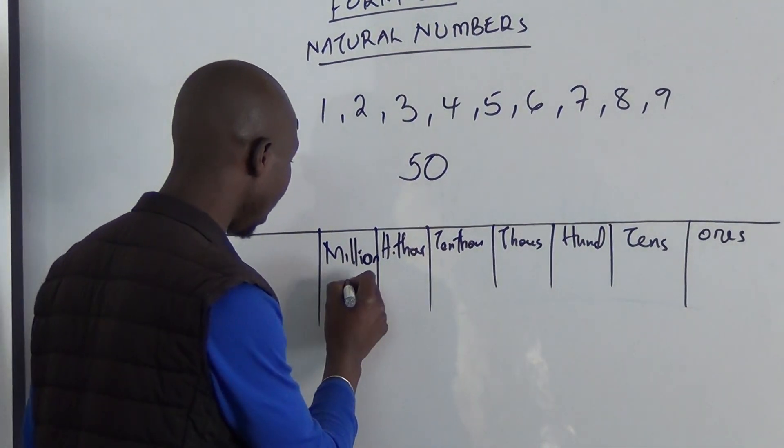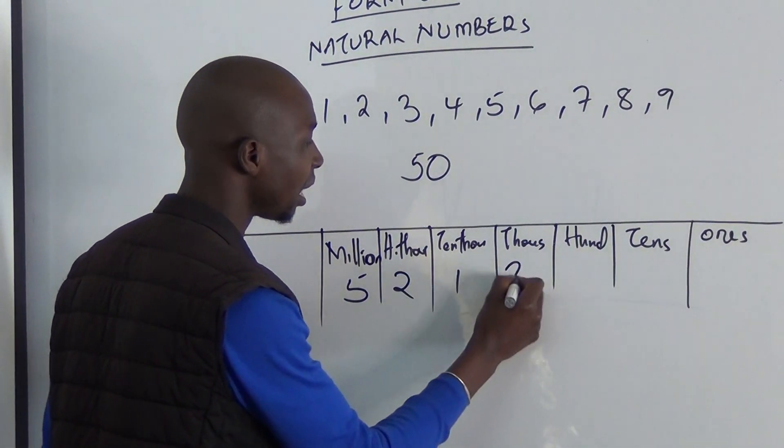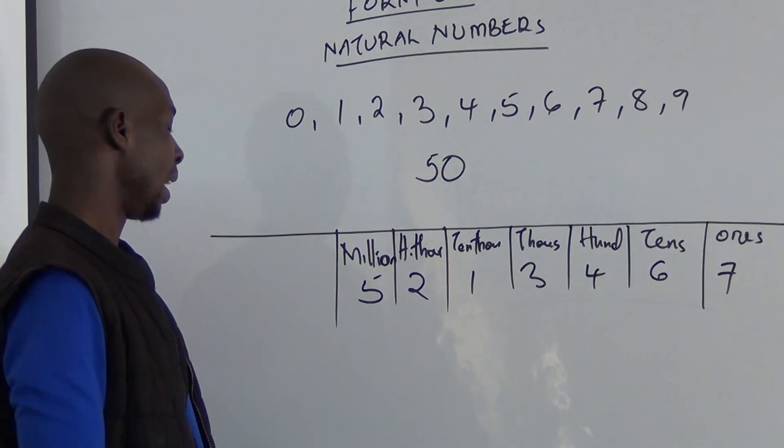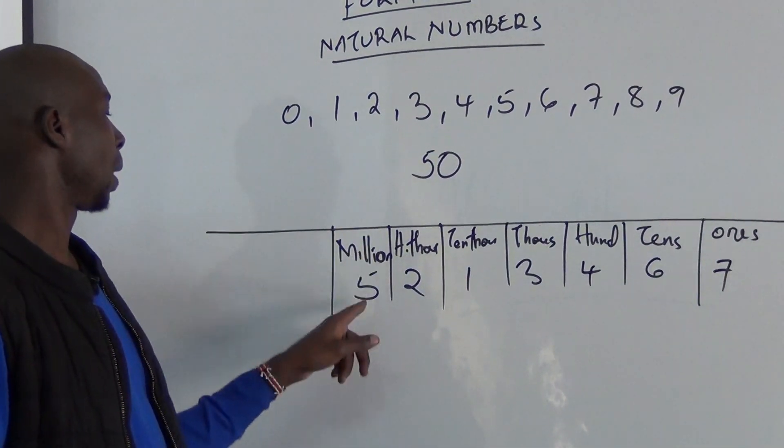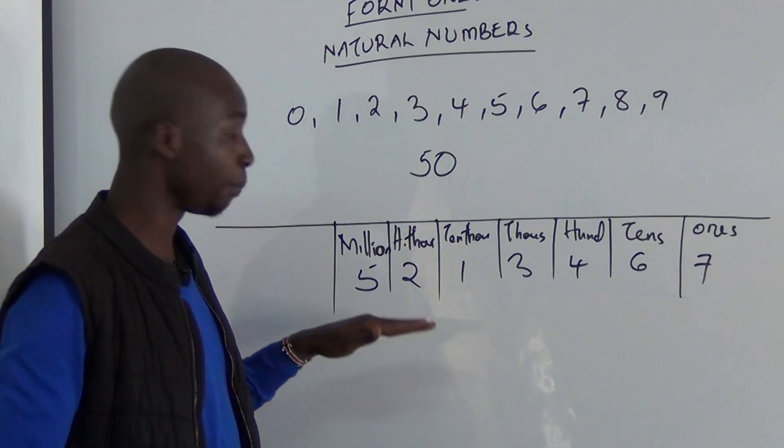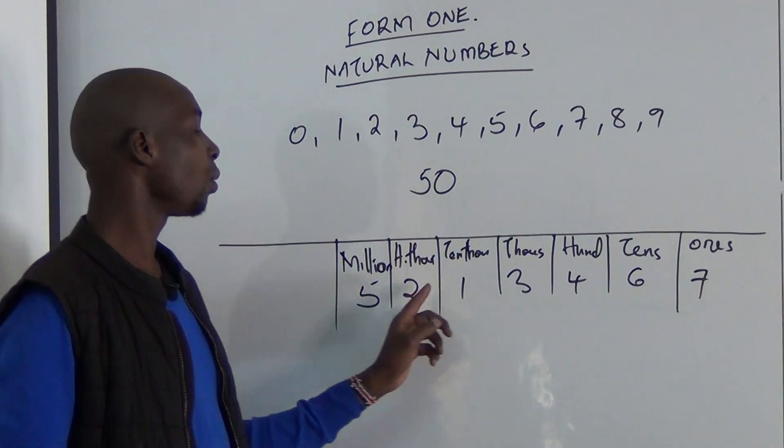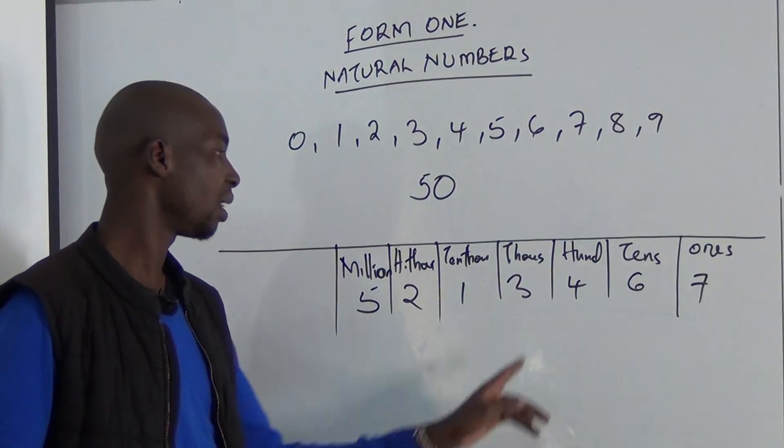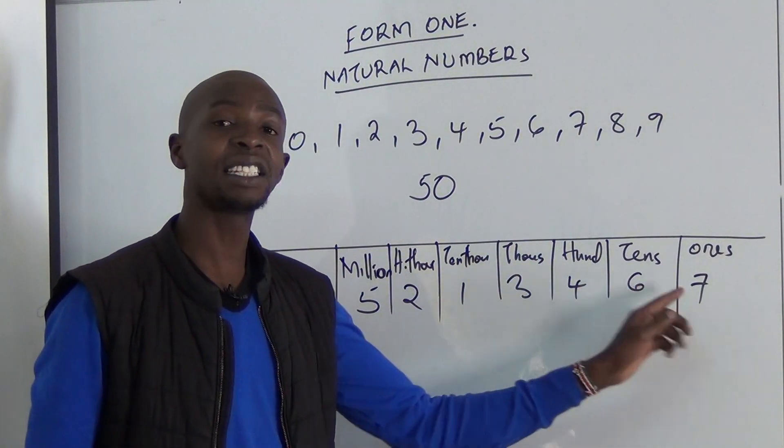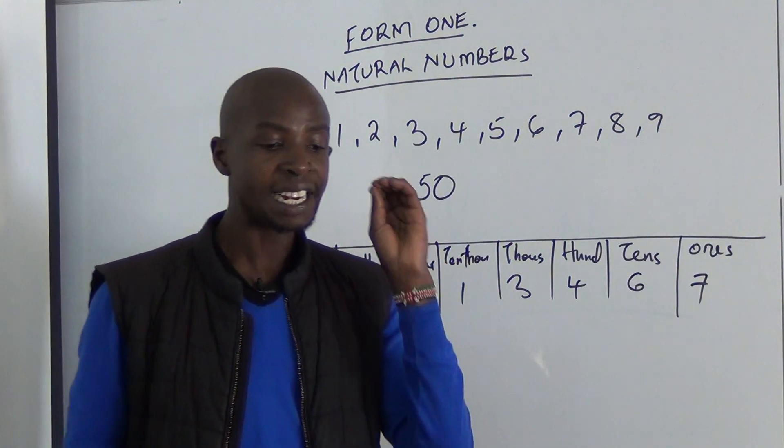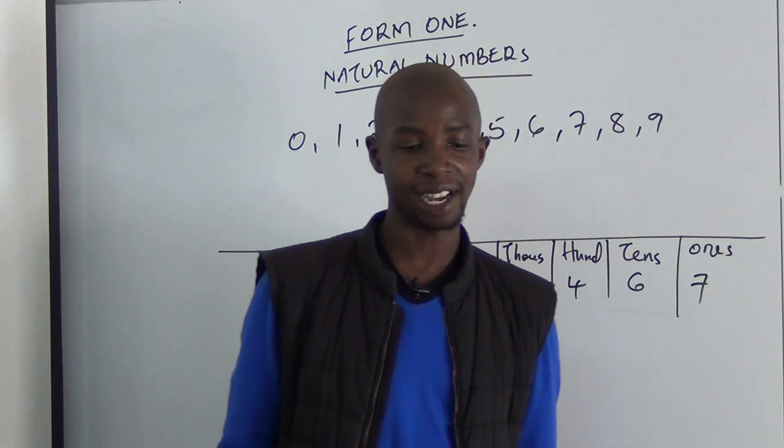So, if I have a number here, 5, 2, 1, 3, 4, 6, 7, it will be read as, because the 5 is under millions, it will be read as 5,213,467.